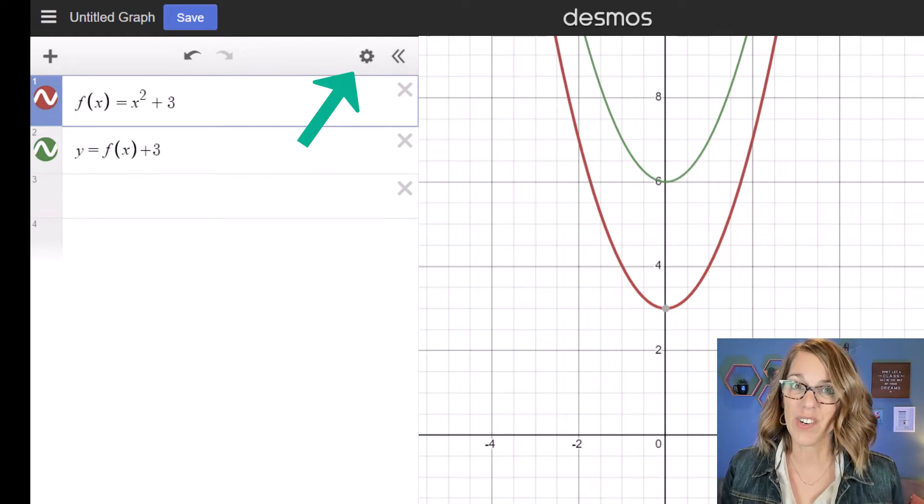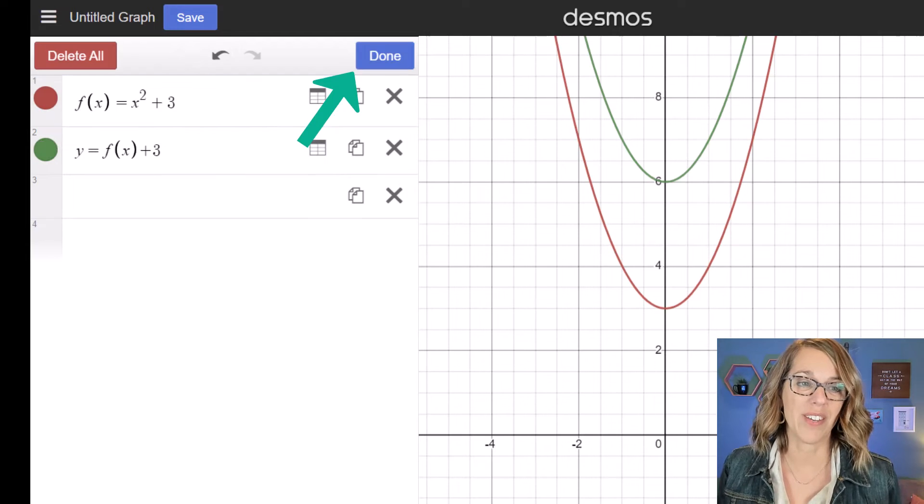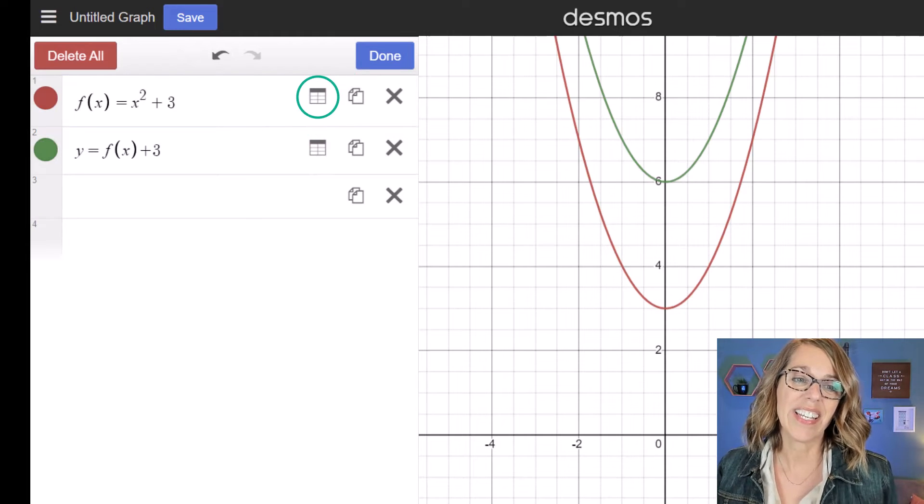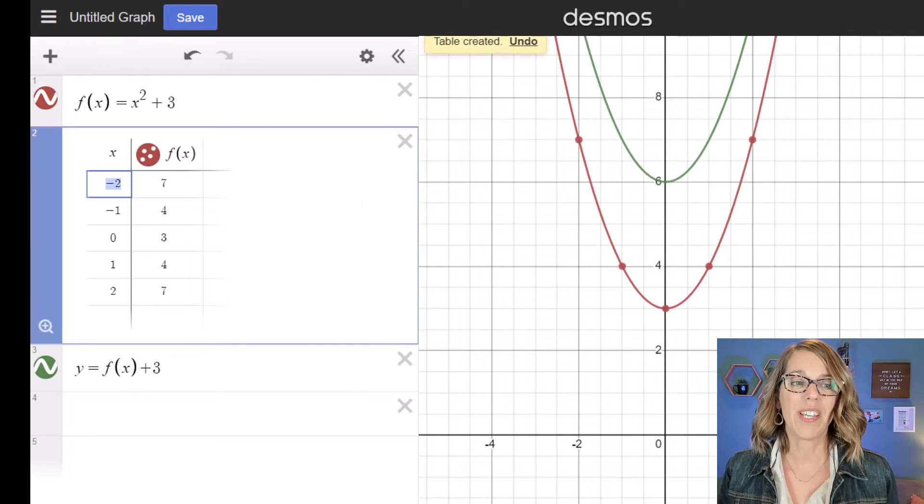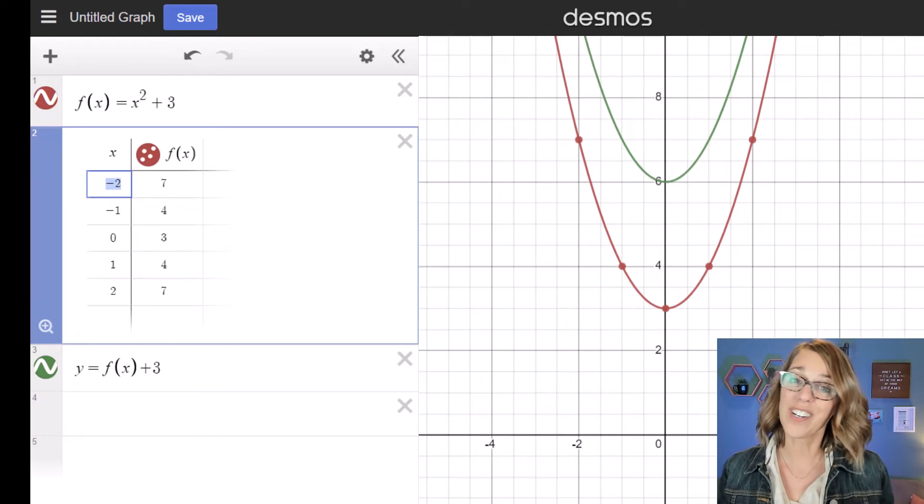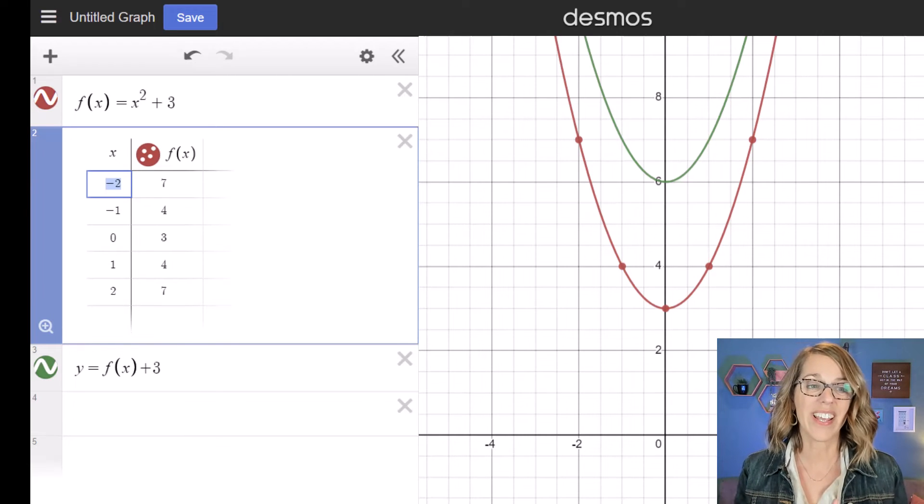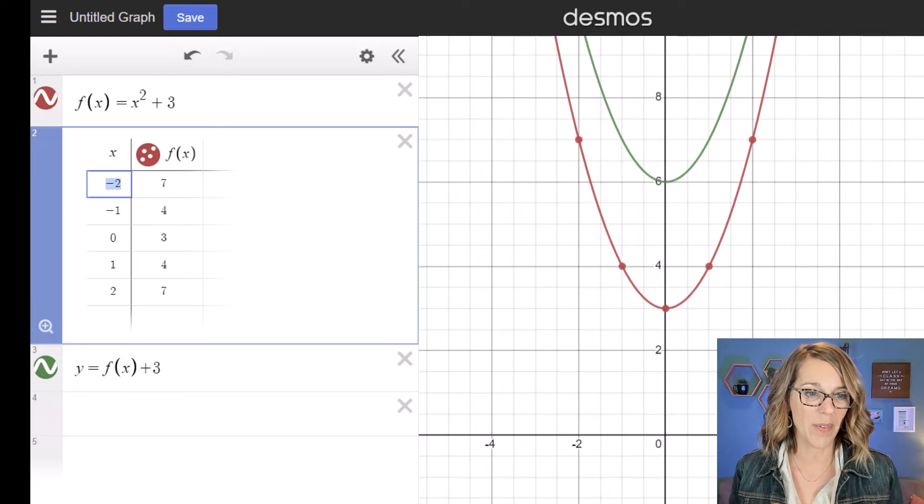I'm going to click on my gear button up here, right above the equation list, and it gives me the option to bring up a table. That table gives me points for the function, so my x's and my f of x's. I can type right over those points as another way of evaluating functions.